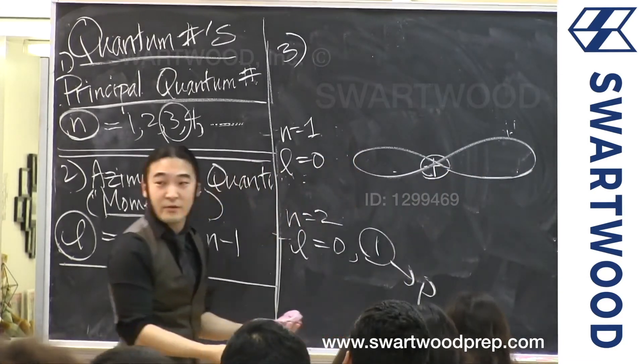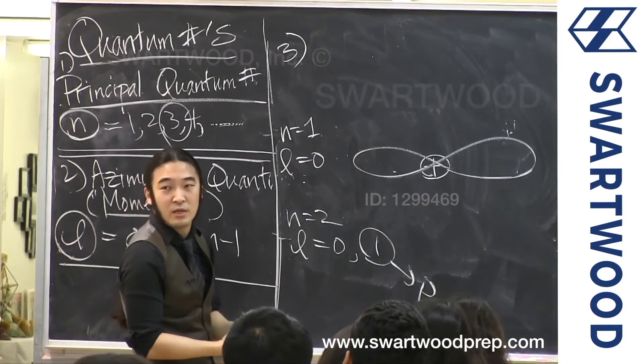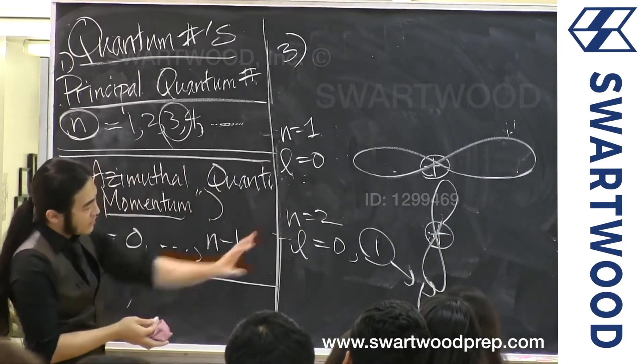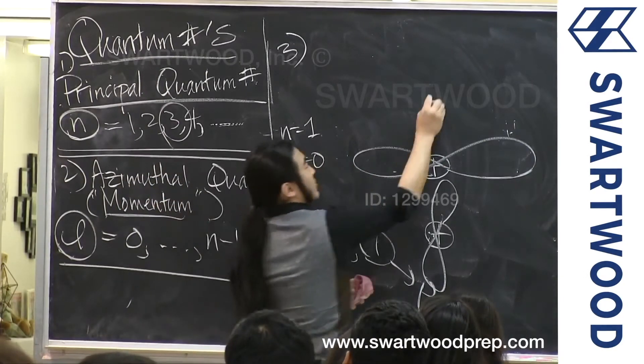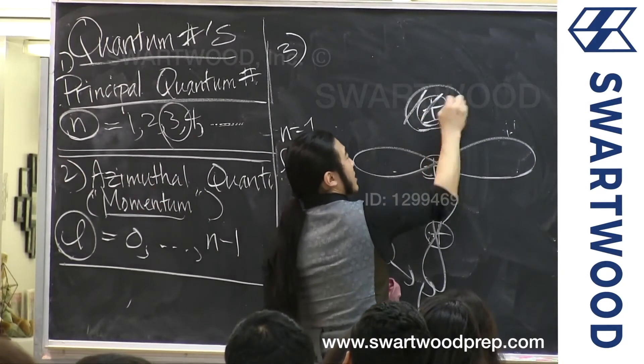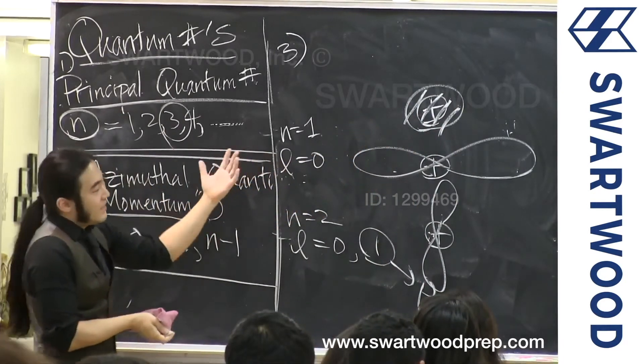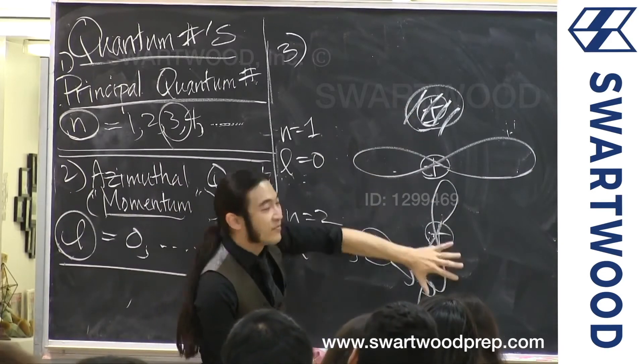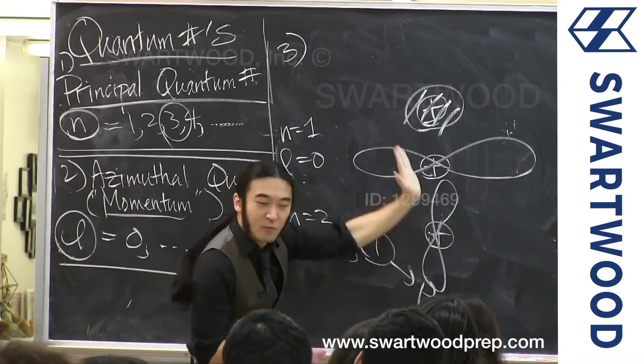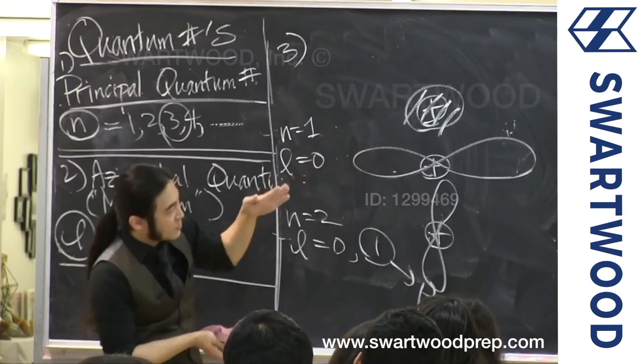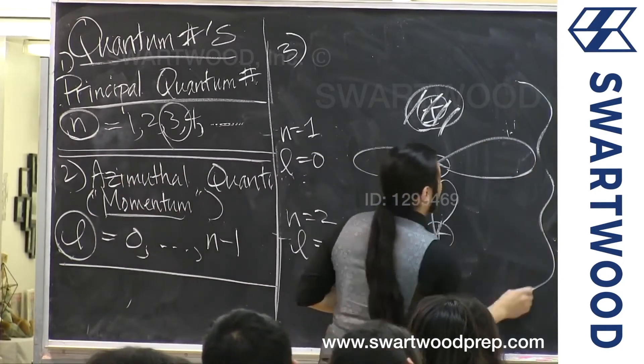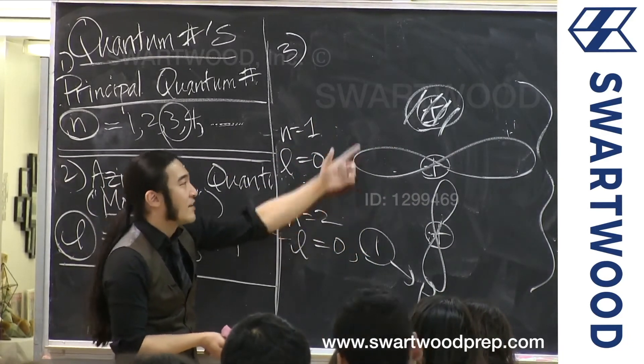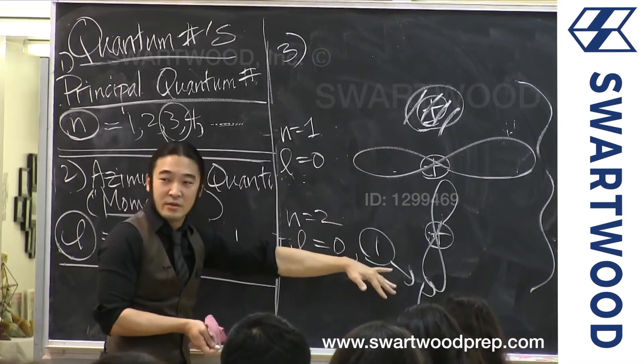But we also said at this point, l can go from 0 up to n minus 1. So you could have a p orbital. Now I'm a little confused because there's room. I can stick a p orbital right there. But there's room. Where else can I stick a p orbital? I can stick it in the other direction or dimension this way. And I still got one more option. What's the third option? You can draw it into the board and out of the board.